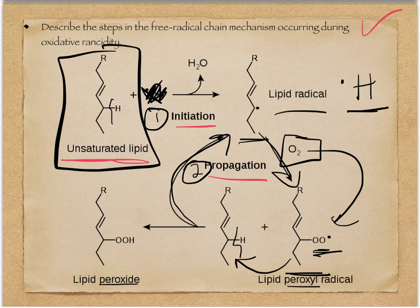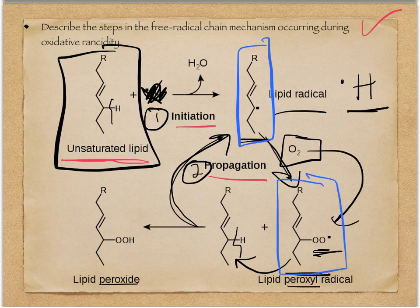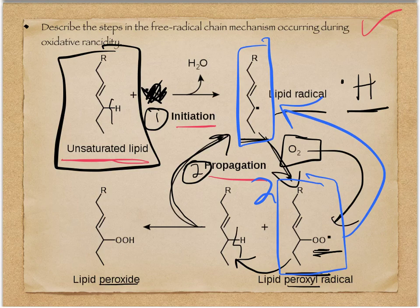Termination can be any time two radicals come together, just like in organic chemistry. If we have two lipid radicals, they can come together and terminate. We could have this peroxyl radical come together with a lipid radical and terminate. Any time two radicals combine, that is a termination step. So you should know initiation, a propagation, and a termination, just like we did for organic chemistry.